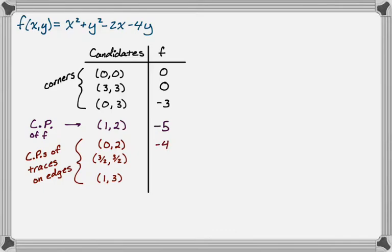(3/2, 3/2). I'm going to have to write this one down. So I get 9/4, plus 9/4, minus 3, minus 6. So that's 18 minus 36 is -18 over 4, so -9/2. And then (1, 3) is 1, plus 9 is 10, minus 2 is 8, minus 12 is -4.